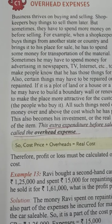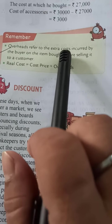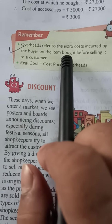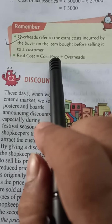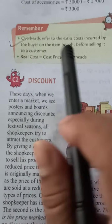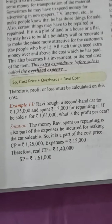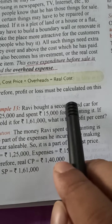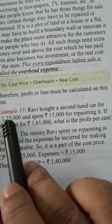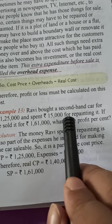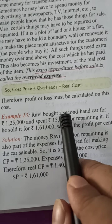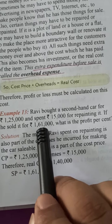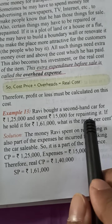So overhead refers to the extra cost incurred by the buyer on the item bought, before selling it to the customer. See this example to get the idea of overhead expenses: we bought a second-hand car for rupees one lakh twenty-five thousand and spent rupees fifteen thousand for repairing it. This fifteen thousand is the overhead expense. If he sold it for rupees one lakh sixty-one thousand, what is his profit percent?